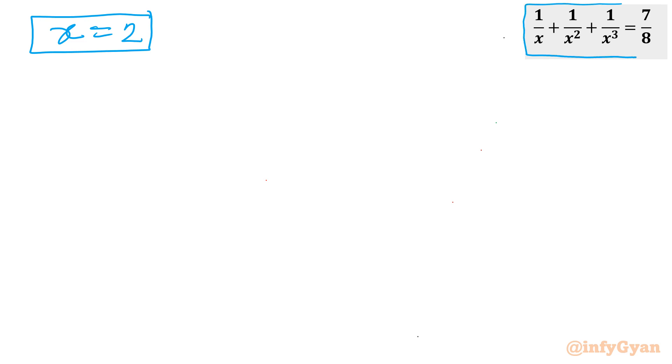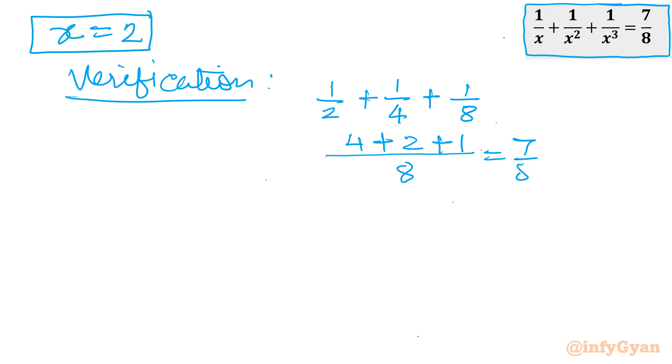Let us verify this value. Equation is there, let me write here: Verification. x is equal to 2. So value will be 1 by 2 plus 1 by 2 square, 1 by 4, plus 1 by 2 cube, 1 by 8. Common denominator if you will find is 8, so 4 plus 2 plus 1, which is equal to 7 by 8, which is equal to our RHS. Hence verified.